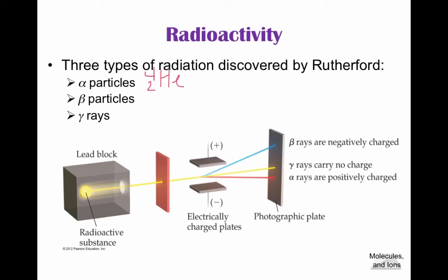Beta particles are simply high-speed electrons — they have a mass of 0 and a charge of negative 1, with the symbol e. These are still particles. Finally, gamma rays are pure energy — not particles at all — and they are the most penetrating, therefore the most dangerous. You can see in this diagram that alpha particles are positively charged, gamma rays have no charge, and beta rays are negatively charged. Alpha particles are the easiest to stop; gamma rays are the most difficult.